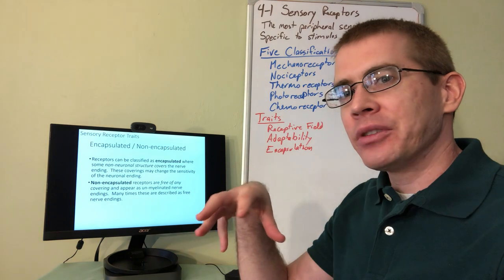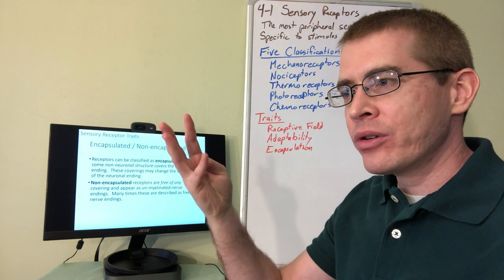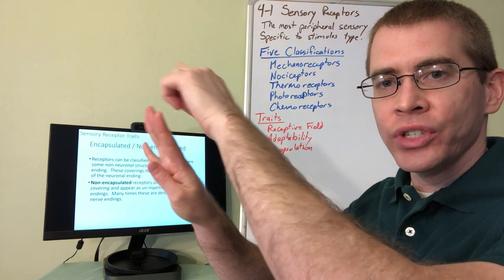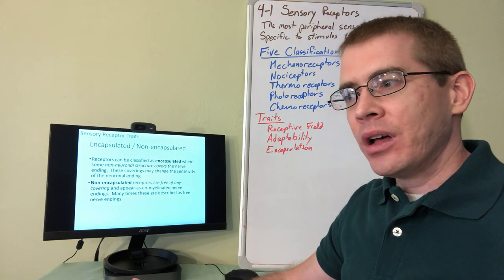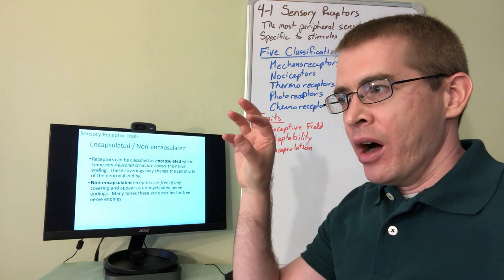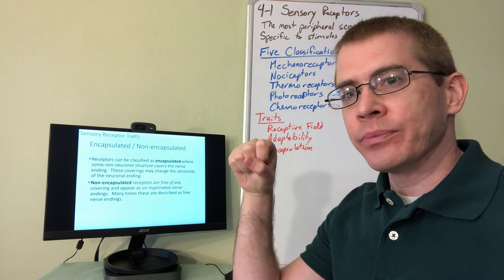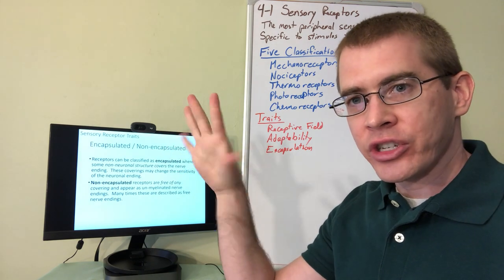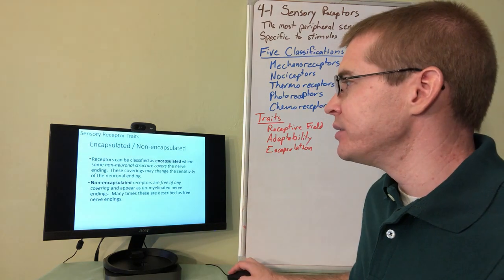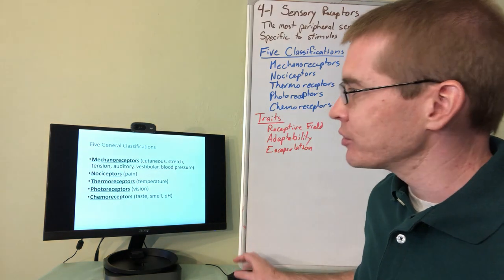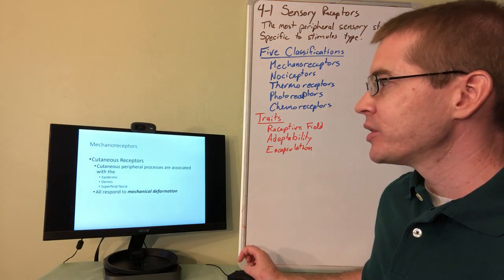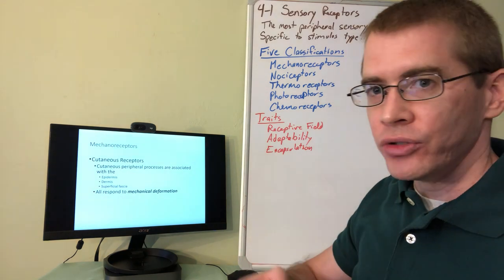The next trait is encapsulation versus non-encapsulation. This refers to whether the nerve ending of the peripheral process has another structure surrounding it. Some sensory receptors have encapsulated endings that provide special functionality to detect certain types of sensation. Others are simply free nerve endings. That nerve covering can determine the type of functionality of the sensory receptor. Here again are the five classifications; we'll start with mechanoreceptors, especially cutaneous mechanoreceptors.